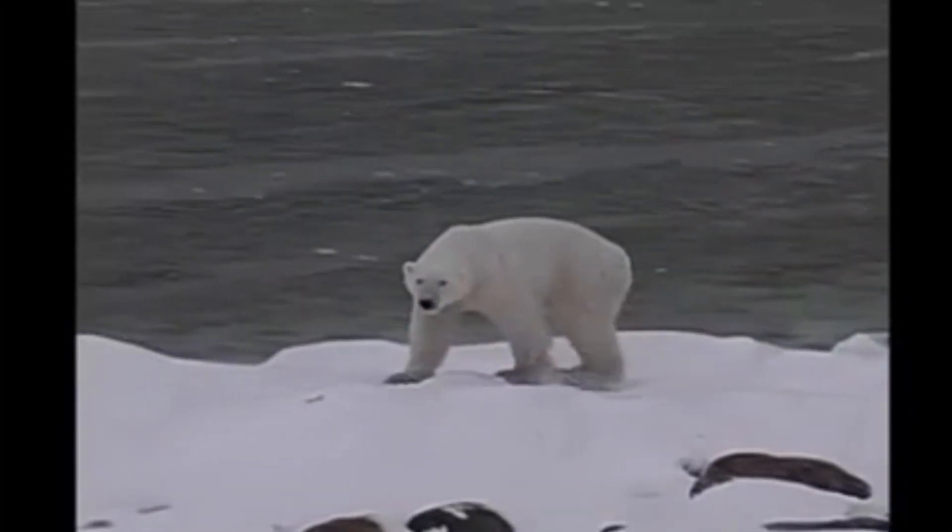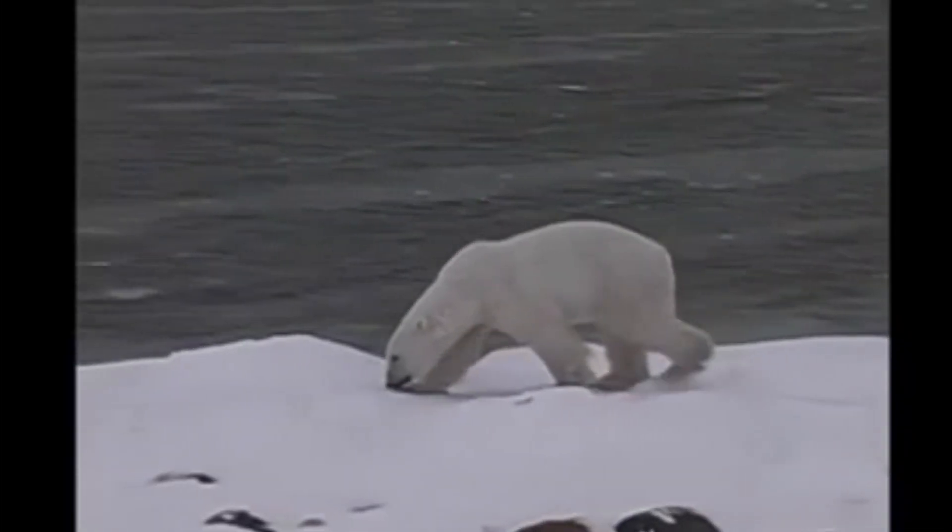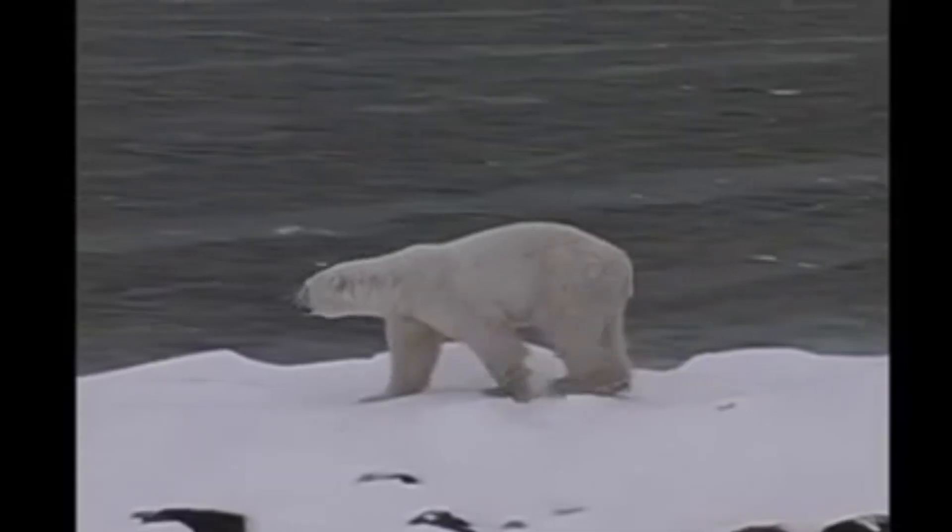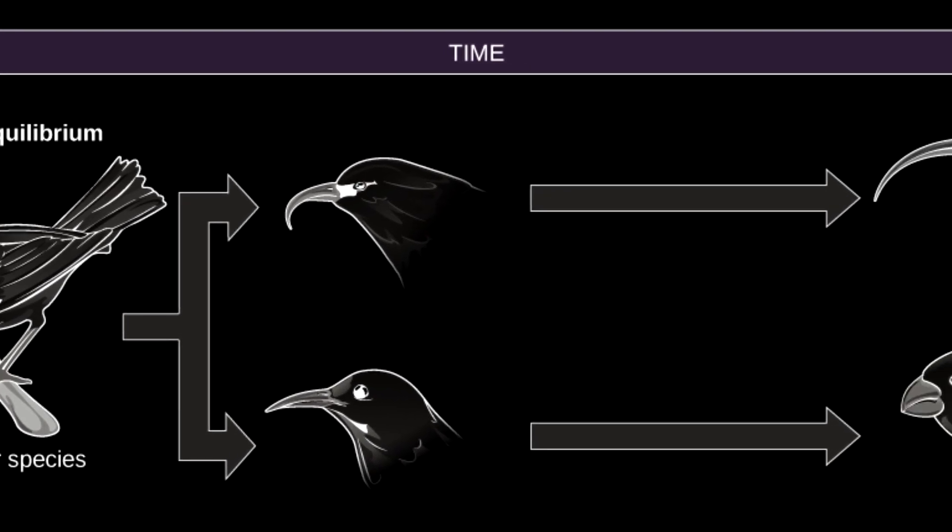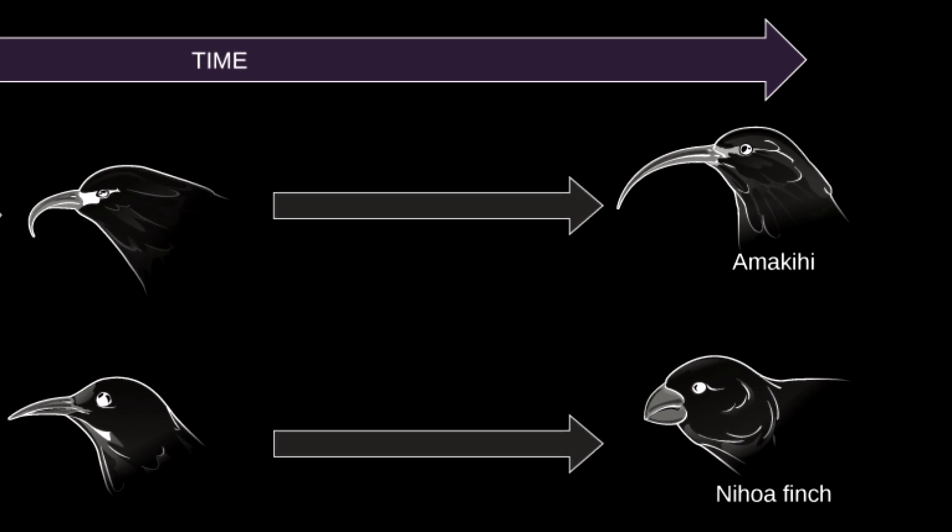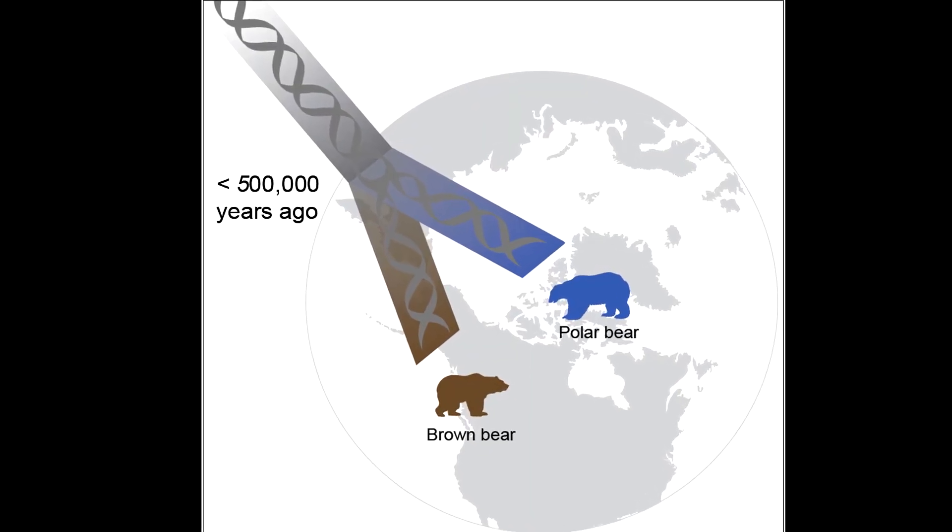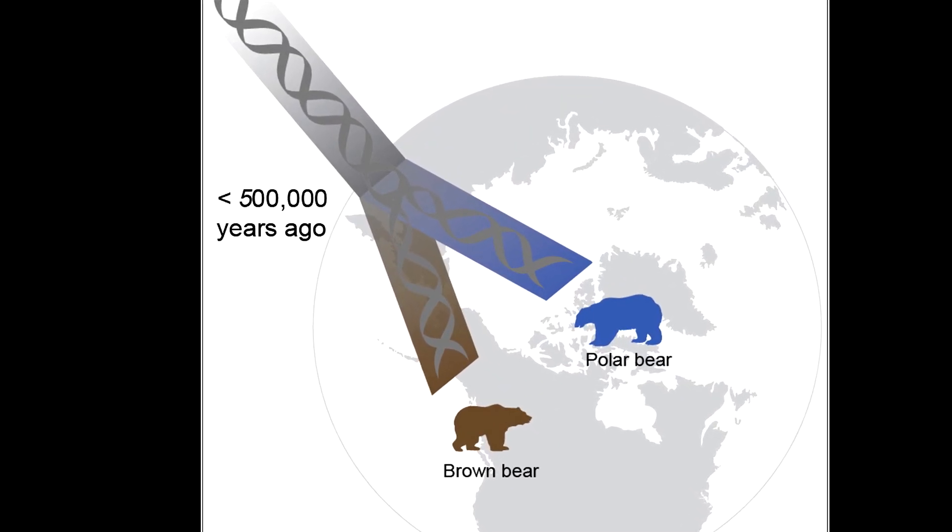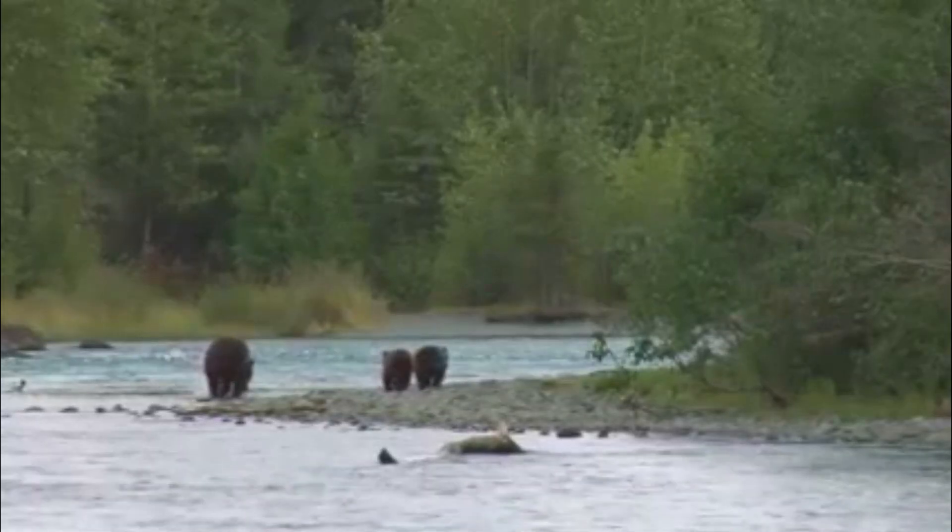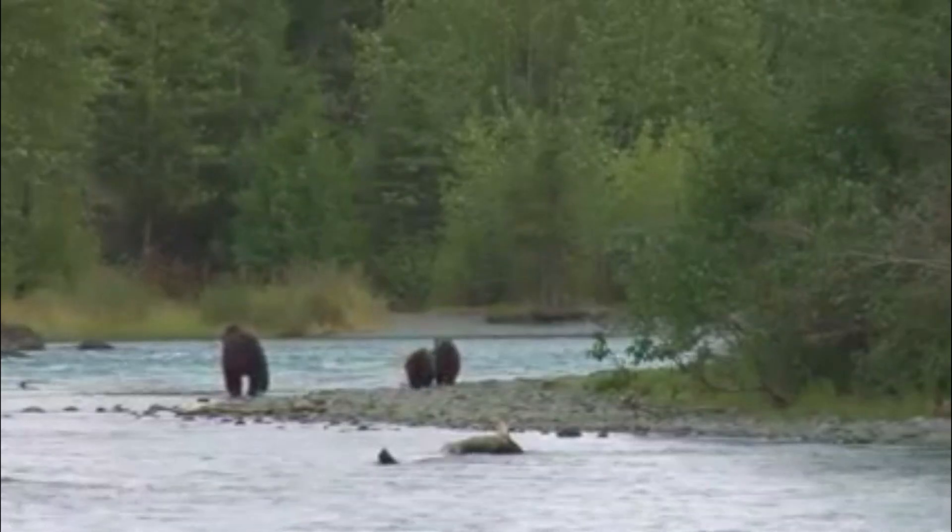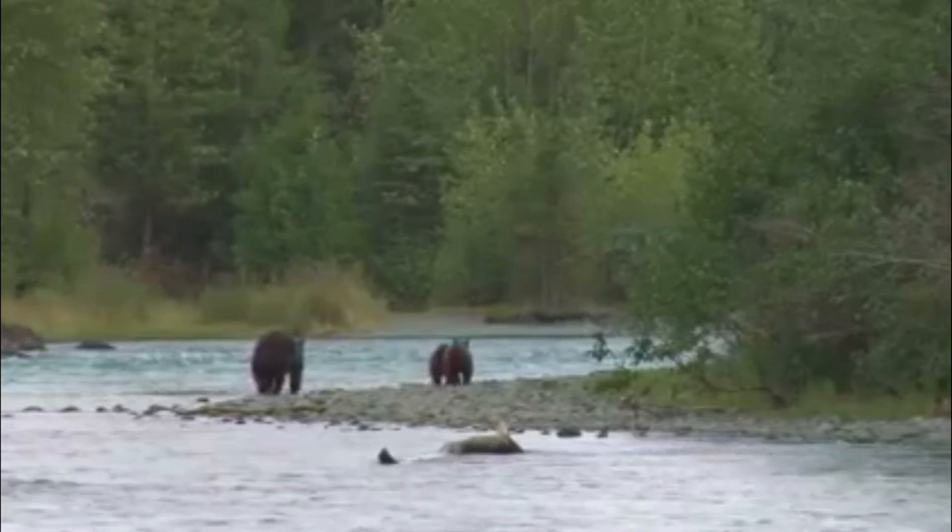This process, whereby organisms better adapted to the environment tend to survive and produce more offspring, is scientifically known as natural selection. And this is how nature guides evolution towards new species. But the polar bear and the brown bear diverged less than half a million years ago. Half a million years ago, the polar bears and brown bears shared their last common ancestor.